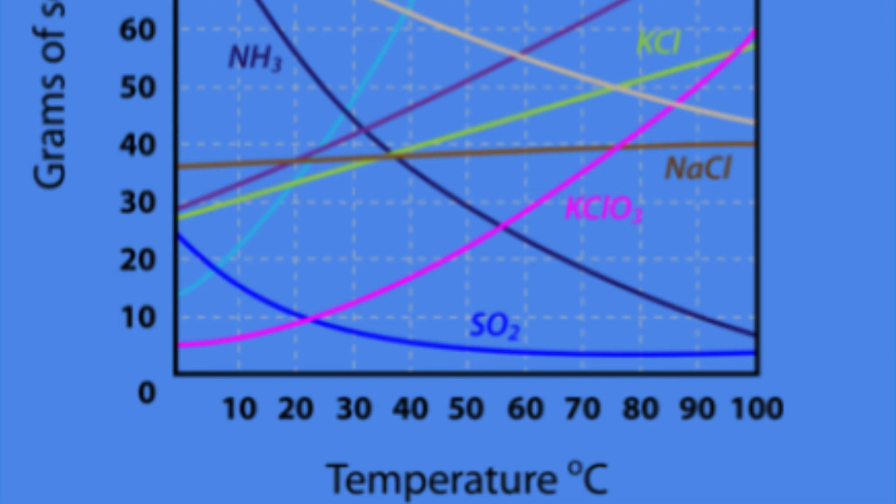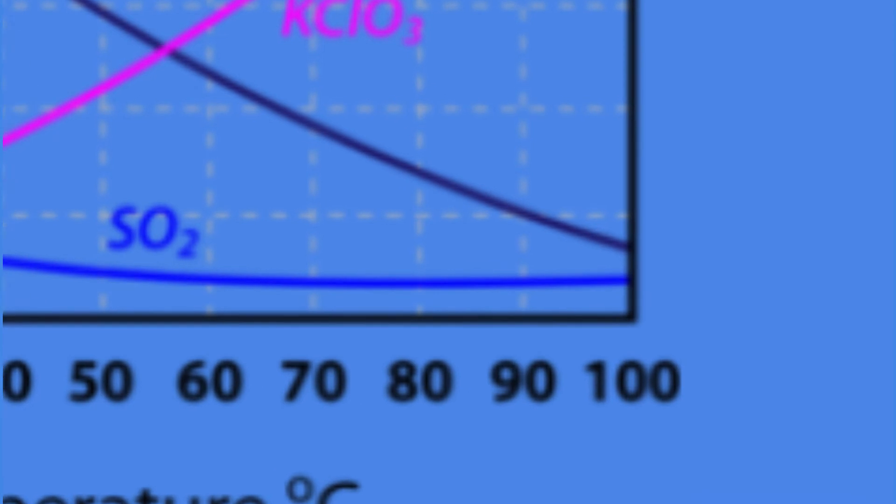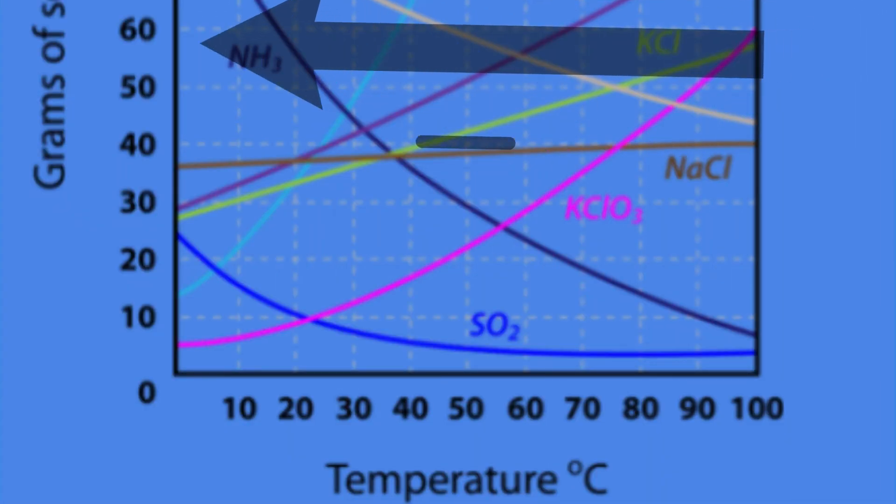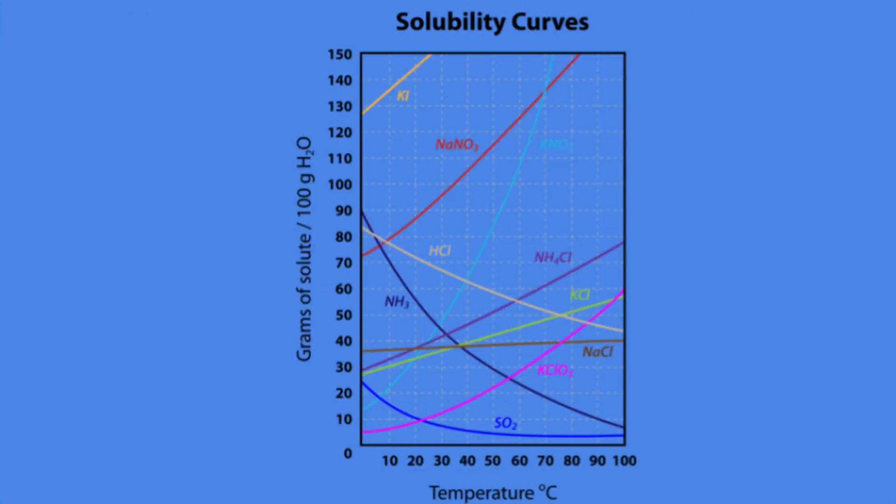Let's look at another example. Let's go all the way to 100 degrees Celsius. We're still looking at KCl. Let's line up our y-axis and we see that it's about 57, maybe 57 grams of KCl is able to dissolve in 100 grams of water. So that is how you read solubility curves.